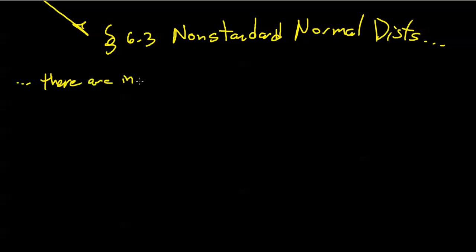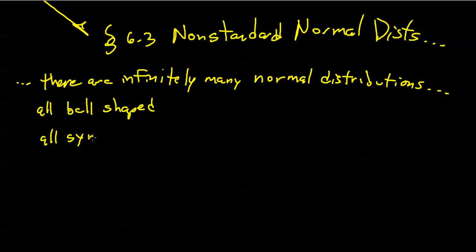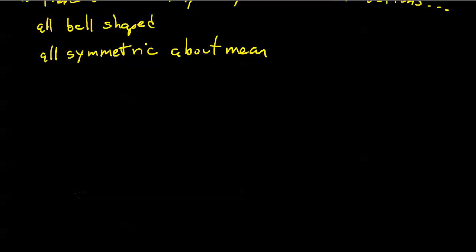There are infinitely many normal distributions. They're all bell-shaped by definition. They're all symmetric about the mean value. What determines where a bell peaks in a non-standard normal is, of course, the mean — the location of the mean.